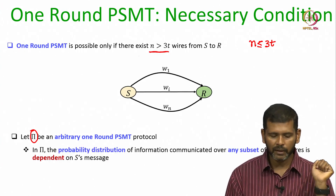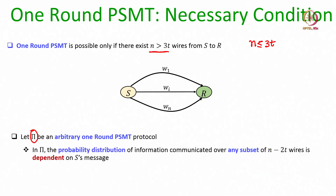What we are going to show is the following: in protocol Pi, the probability distribution of the messages over any subset of N minus 2T wires has to depend on the sender's message — it cannot be independent of it.